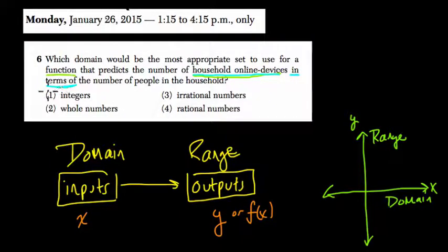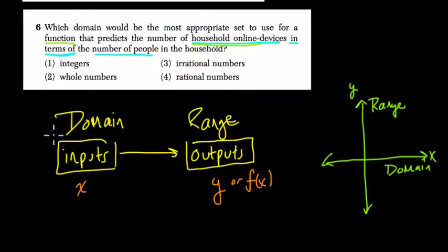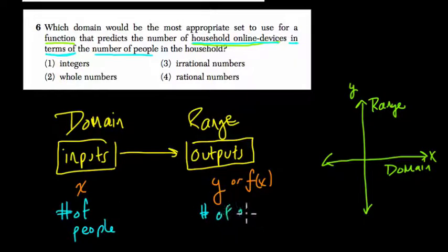Or in other words, dependent on. Or in other words, this tells you that the number of people are the independent variable, the domain. Domain is independent variable as well, as you would say in science here. So here, the domain happens to be the number of people.